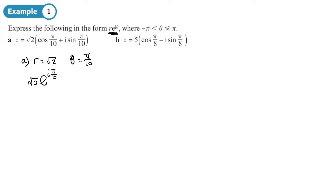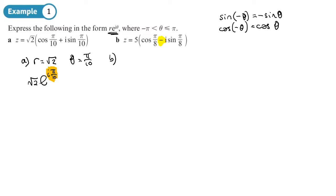You can put the i in front or after — it's up to you. For part b, to be in the correct form, we need a plus sign. So we're going to use our identities for sine and cosine to change that to a plus sign. We know that sin(−θ) = −sinθ, and cos(−θ) = cosθ. We'll use those to help us.